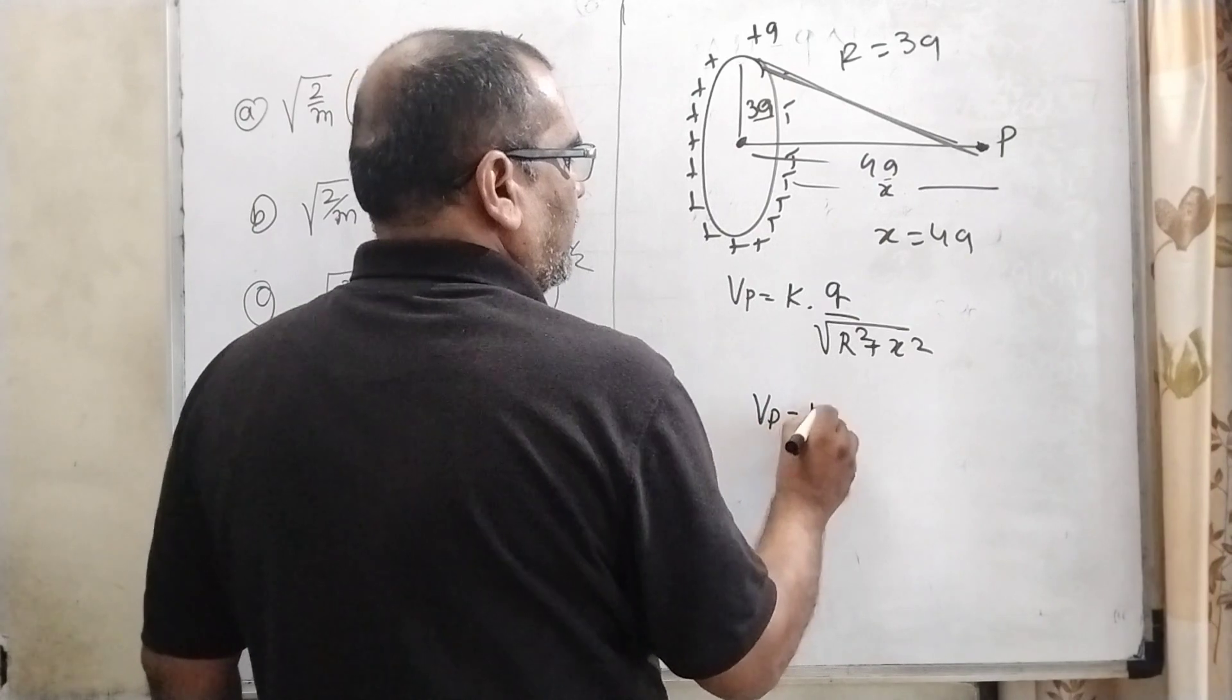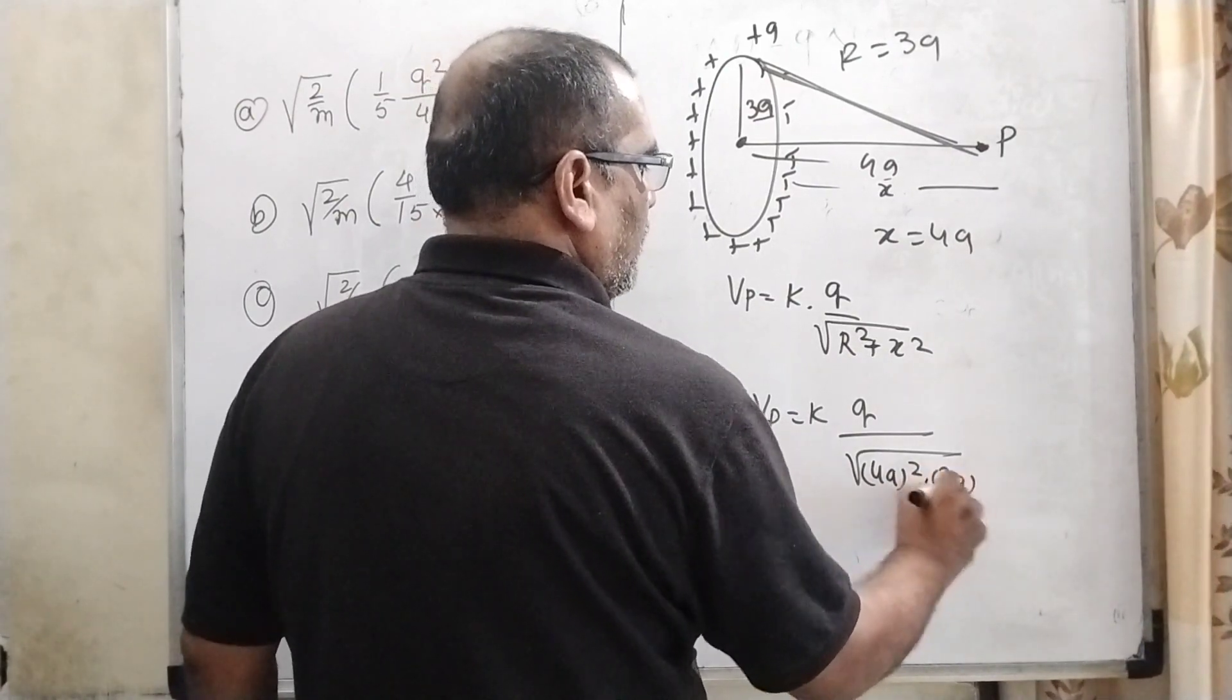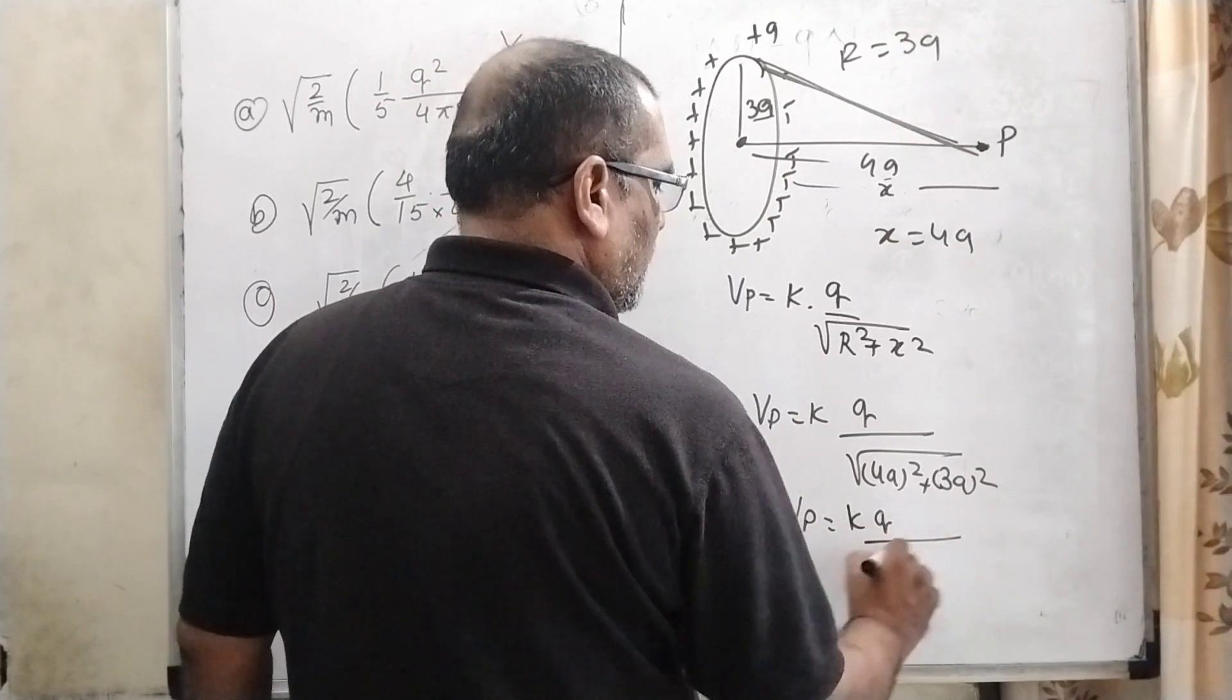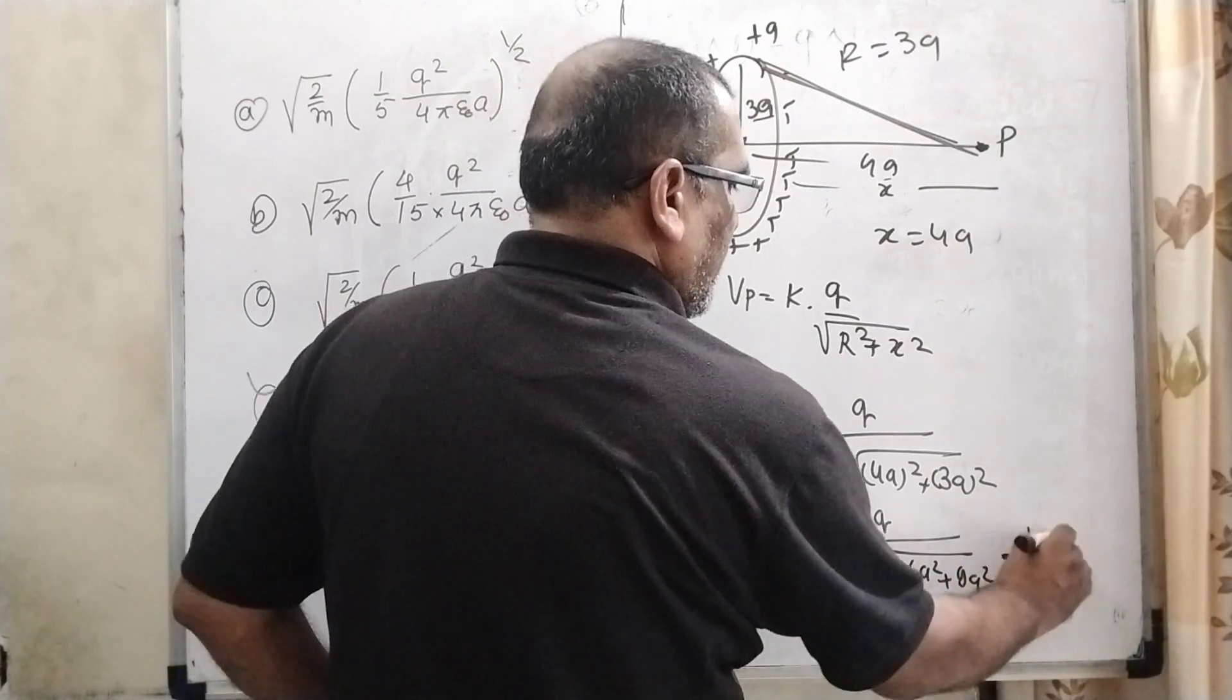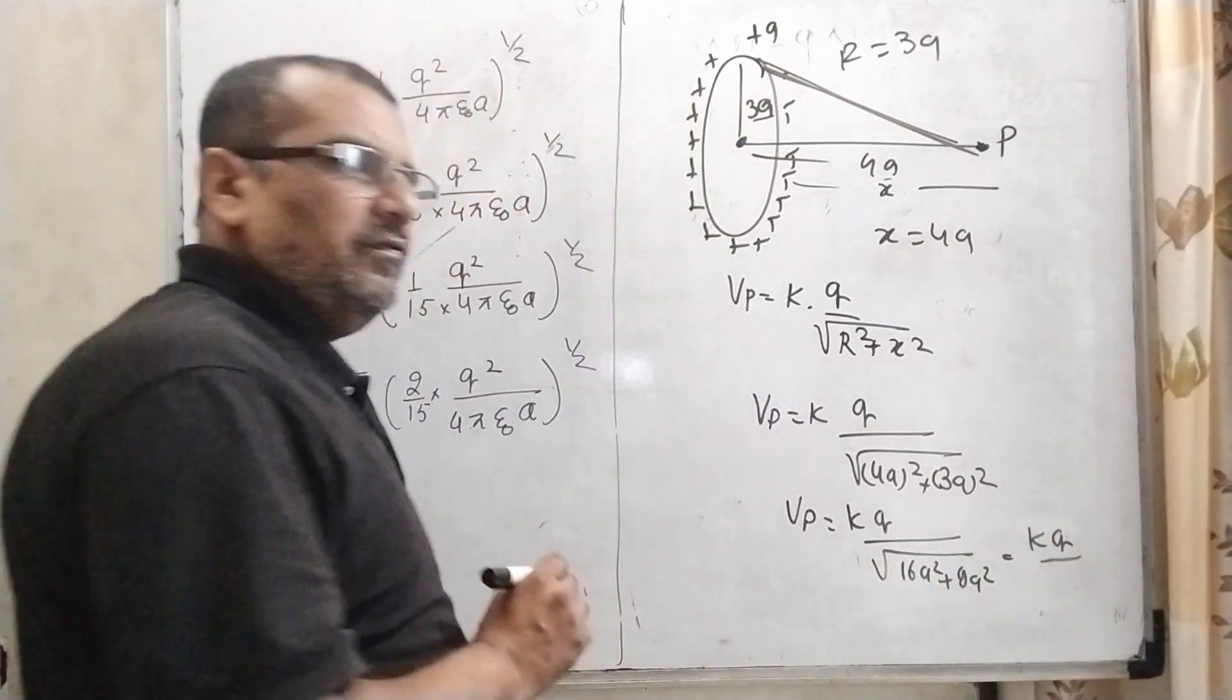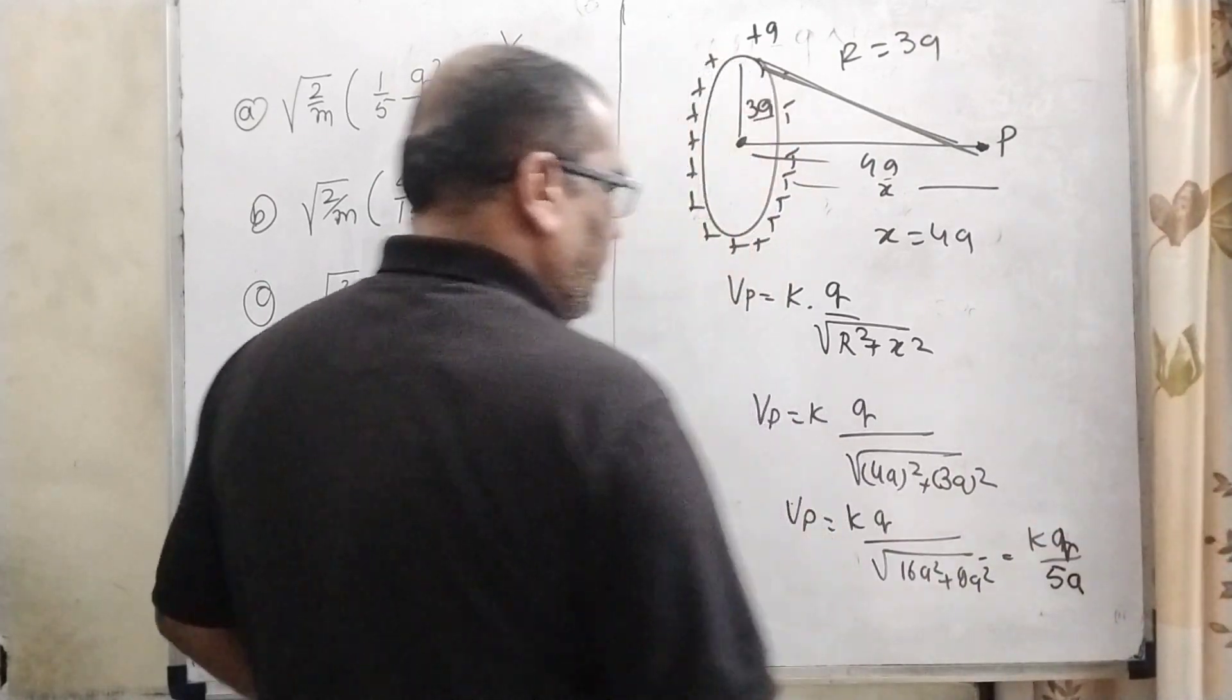Then Vp equal to kq by root of 4a whole squared plus 3a whole squared. Then Vp equal to kq by root of 16a squared plus 9a squared, which is root 25a squared, and that is 5a. So here we get Vp.